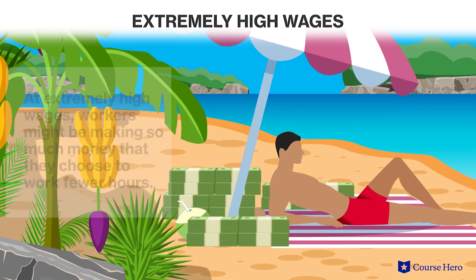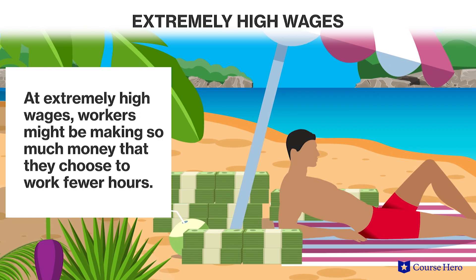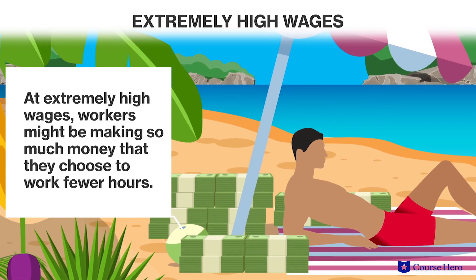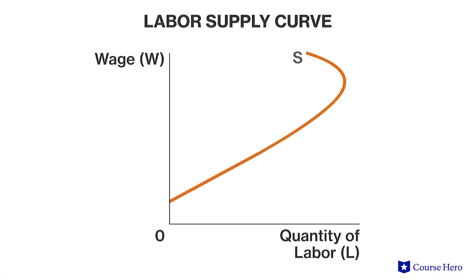At extremely high wages, on the other hand, workers might be making so much money that they actually choose to work fewer hours when their wages increase. Few people would be likely to work 40 hours per week at a wage of $1 million per hour, for example. Therefore, the labor supply curve is often drawn as backward bending, having a negative slope at high wages, although sometimes this part of the labor supply curve is not explicitly shown on a graph.